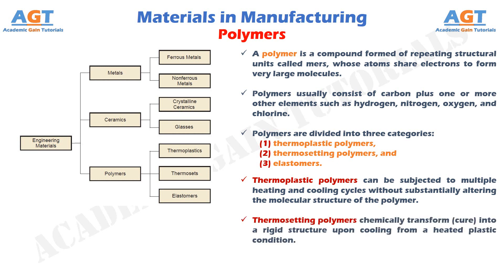Thermosetting polymers chemically transform — cure — into a rigid structure upon cooling from a heated plastic condition, hence the name thermosetting. Members of this type include phenolics, amino resins, and epoxies. Although the name thermosetting is used, some of these polymers cure by mechanisms other than heating. Elastomers are polymers that exhibit significant elastic behavior, hence the name elastomer. They include natural rubber, neoprene, silicone, and polyurethane.